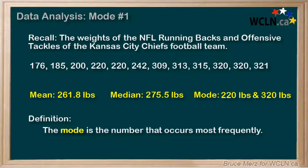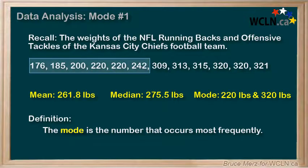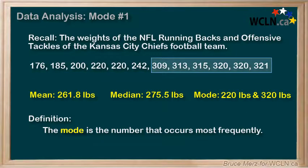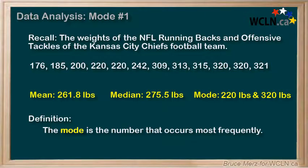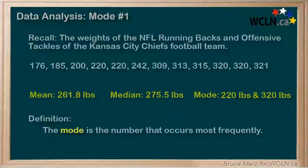In fact, it's more than fine, because if we look at the numbers of 220 and 320, we can see that this is probably a much, much better representative of a typical weight than the mean of 261 or the median of 275.5. The running backs are being represented by the mode of 220, and the offensive tackles are being represented by the mode of 320. Sure, those modes are both on the high end of each of those groups, but they are still much more typical than what the mean or the median gave us.